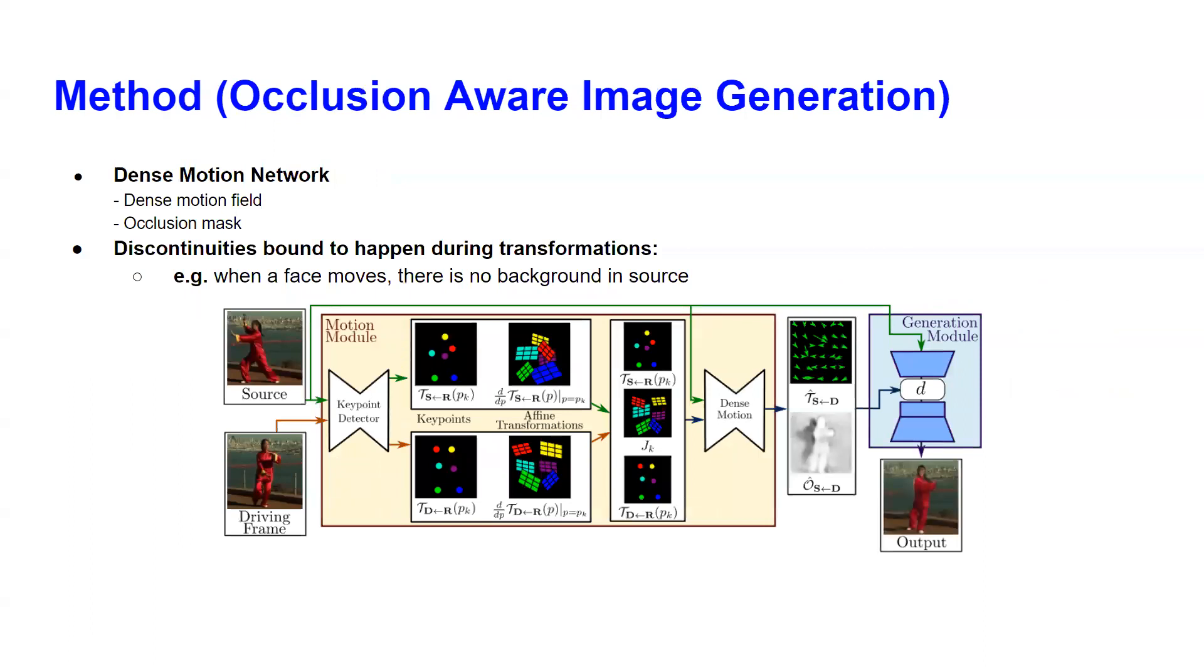Moving on, then using that information, authors use a dense motion network, which takes information generated by the key point detector and uses it to output dense motion field, which is used to warp the source image in such a way that it will best resemble the driving frame. It also outputs an occlusion map, which is needed because when we change the driving frame, the source image according to the driving frame, we have some discontinuities during the transformation.